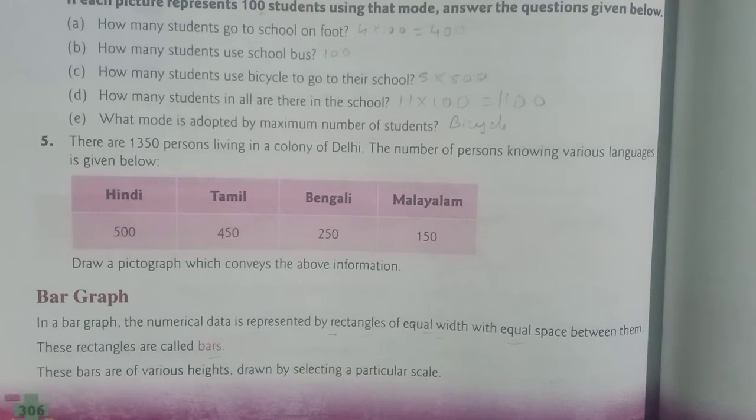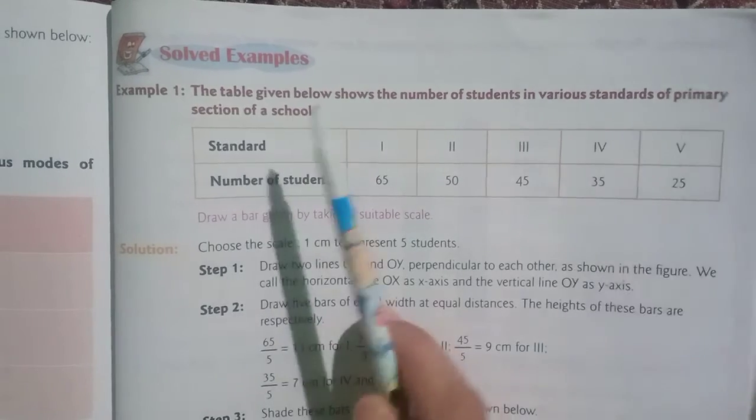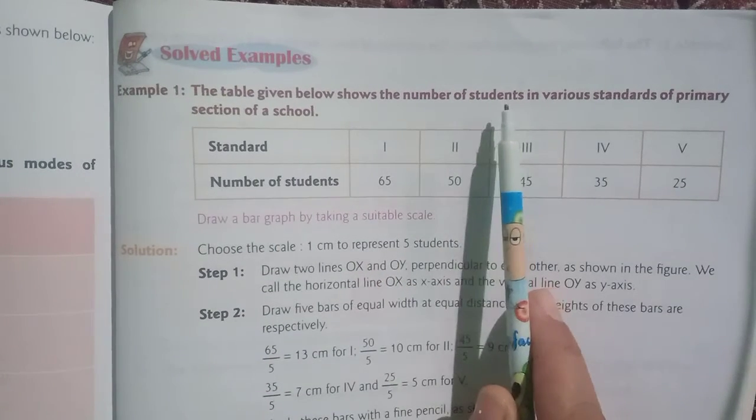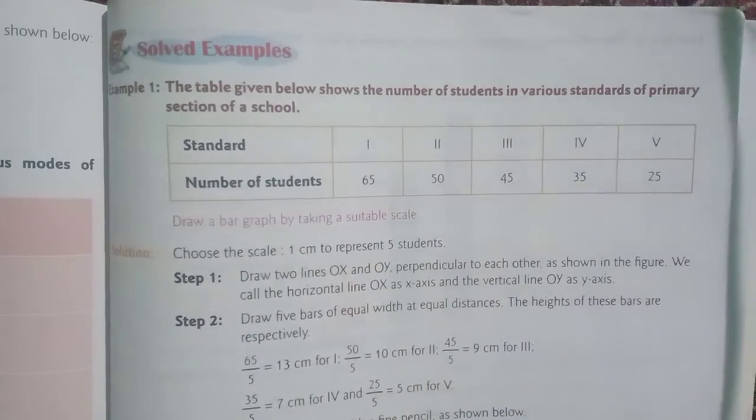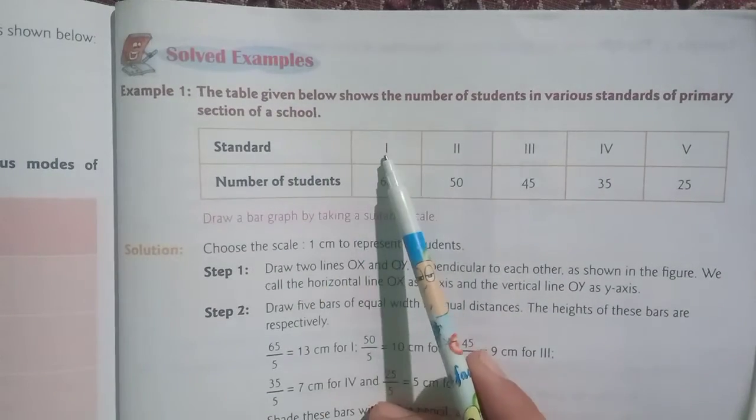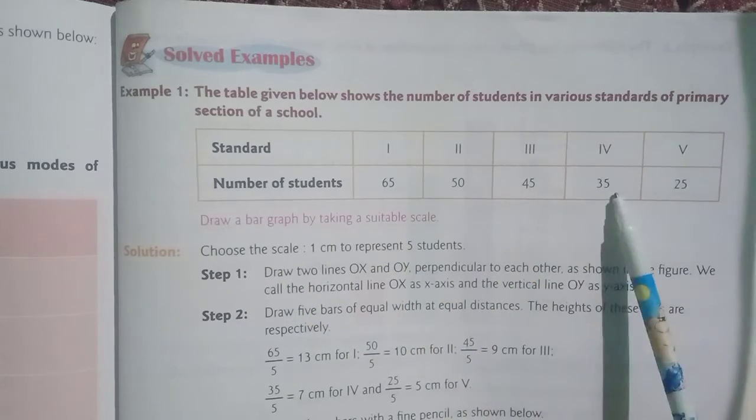Now these bars are of various heights, drawn by selecting a particular scale. Let us see one example. The table given below shows the number of students in various standards of primary section of a school. The standards are first, second, third, fourth, and fifth, with 65, 50, 45, 35, and 25 students respectively.